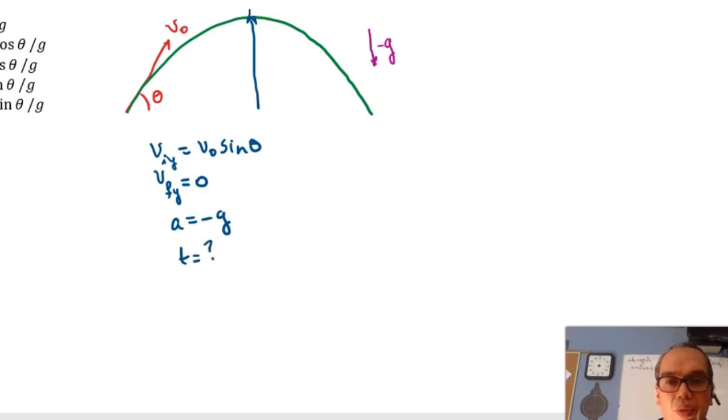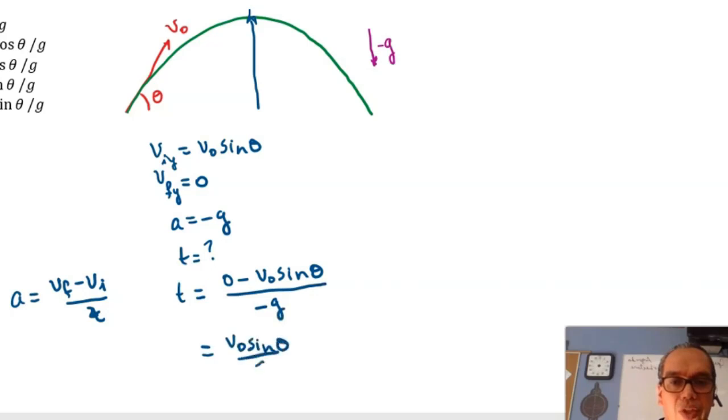Given that the acceleration is negative g and we want the time, the first equation is perfectly adequate: final velocity minus initial velocity over time. And so, the time to go all the way up will be zero minus v0 sine theta divided by negative g, which equals v0 sine theta over g.